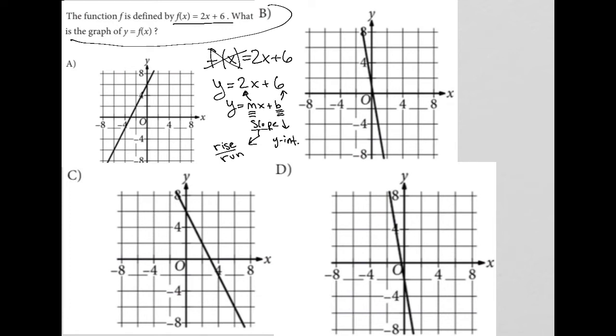So choice A, it has a y-intercept at 6. And it looks like it goes up 2 to 8.